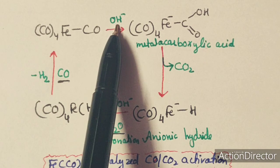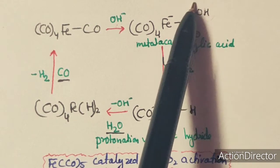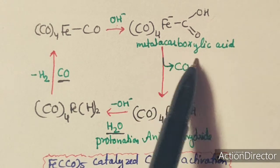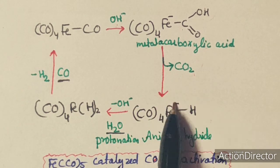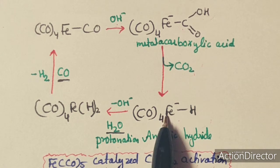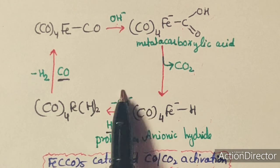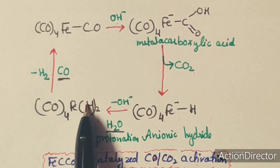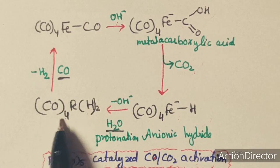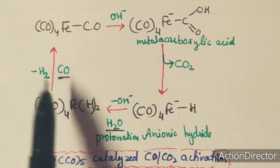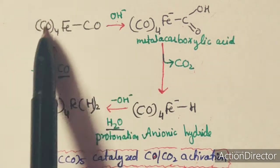The metacarboxylic acid reacts with base, and first deprotonation takes place, followed by decarboxylation — removal of CO2. Then protonation takes place again, giving a monohydride anionic hydride complex. When this anionic hydride reacts with H2O, the OH⁻ base is removed and H2O adds one H to the complex, forming a dihydride complex. This dihydride complex can then release H2, and CO can be added to regenerate Fe(CO)5.